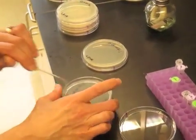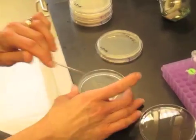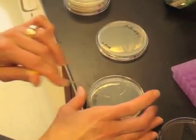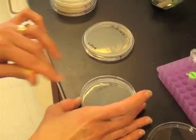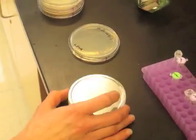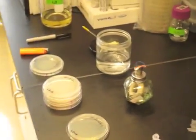Then you can spread the liquid on the surface of the plate like that. It just needs to be spread around a little bit and then allowed to sink in before you turn them upside down to grow overnight.